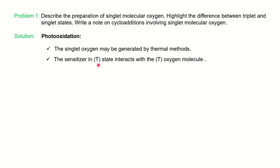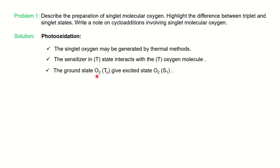The sensitizer will go into the triplet state and interact with the triplet oxygen. The ground state triplet oxygen will be converted to the excited singlet state oxygen. This is entirely different from normal cases — normally a molecule exists in the singlet state and in the excited state goes to the triplet state. Oxygen with lone pairs is more stable in the triplet state, so the singlet state with a single free radical on oxygen is less stable and hence is the excited state.